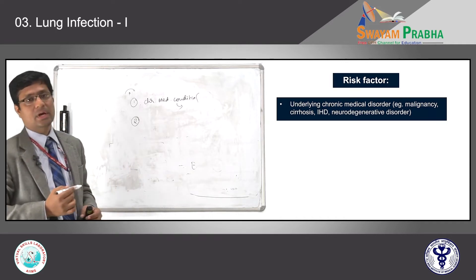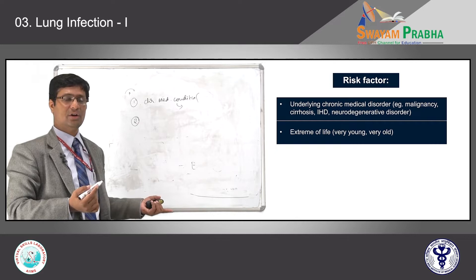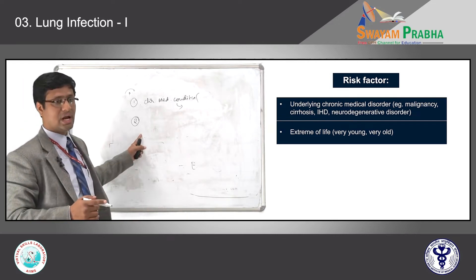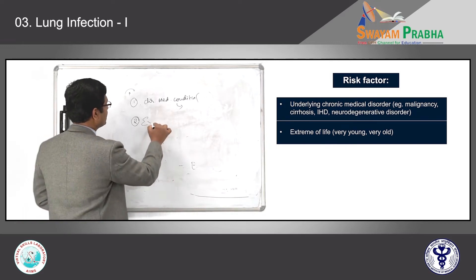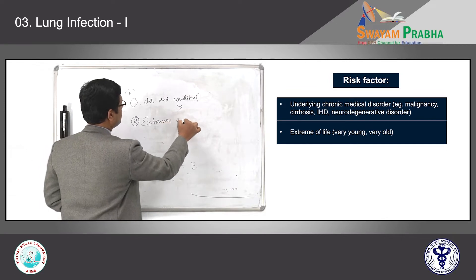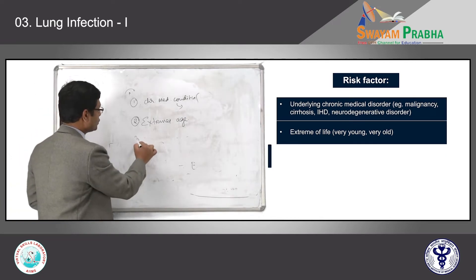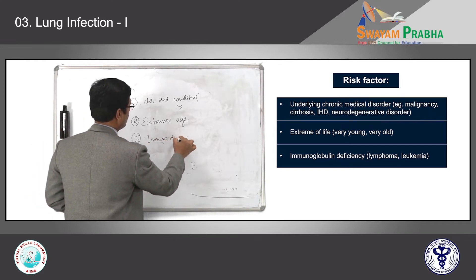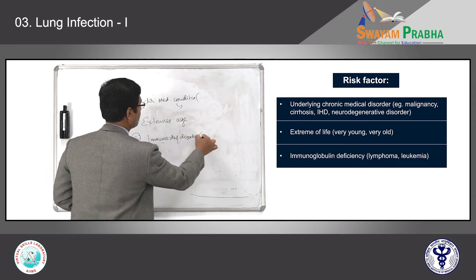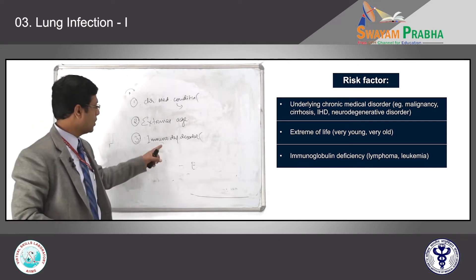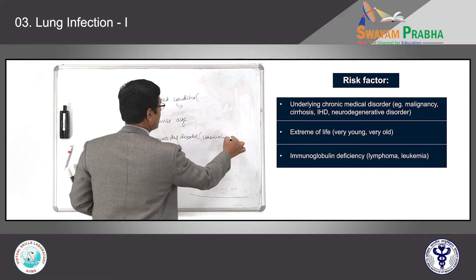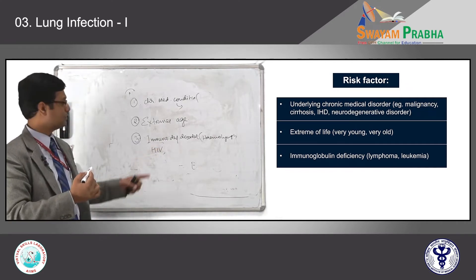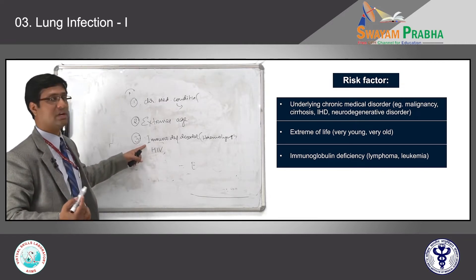Secondly, extremes of life — either infants or the very old — are more commonly affected with lung infections. Children below the age of 5 years are more commonly present with lung infections. Also, all individuals who have immunodeficiency disorders, hematolymphoid malignancies, patients with HIV or retroviral infections, are more prone to develop lung infections.